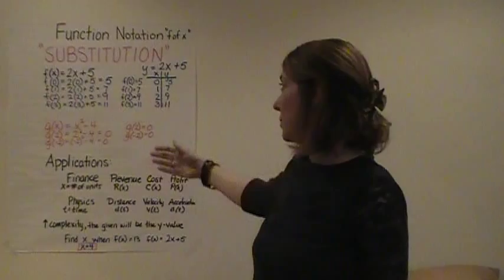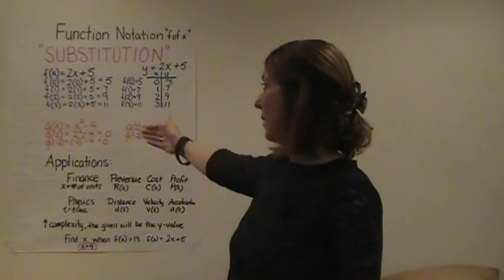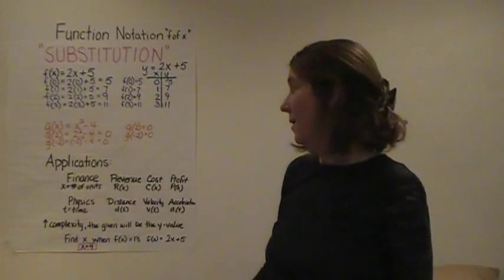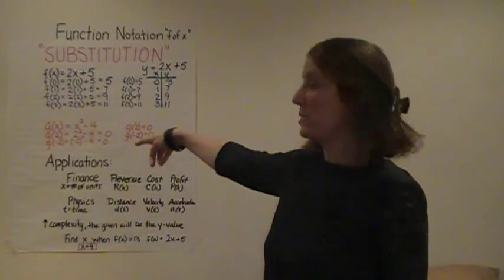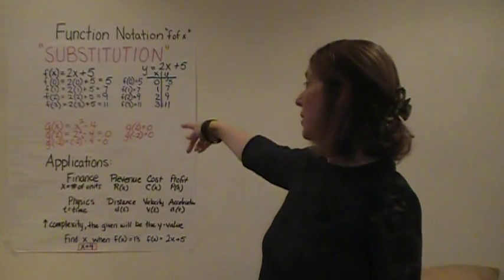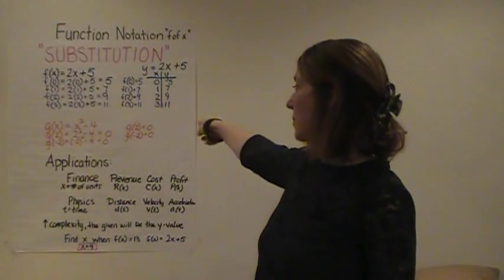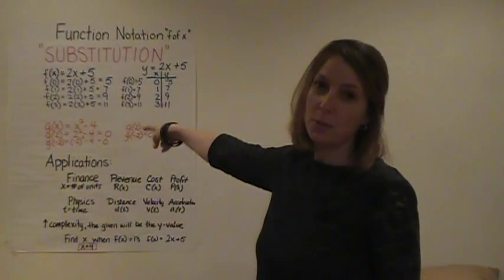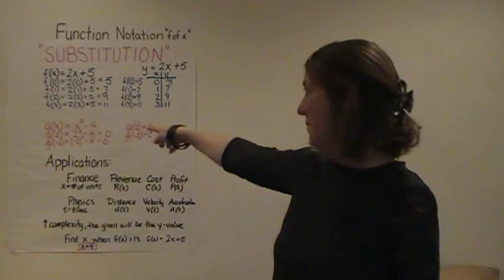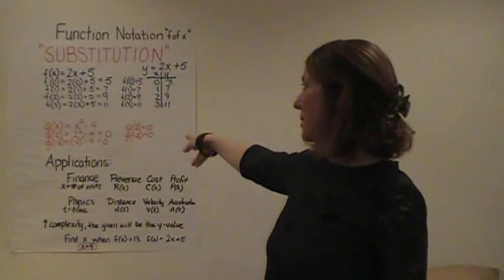Instead of just using f, sometimes people use other letters such as g. So here I have another function, g(x) equals x squared minus 4. When you plug in 2 and negative 2, both squared is positive 4. So we could write g(2) equals 0, because 2 squared minus 4 is 0, and negative 2 squared minus 4 is also 0.